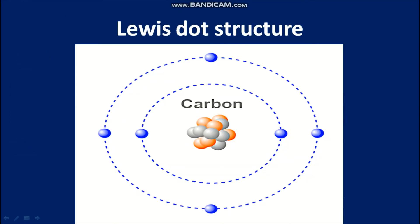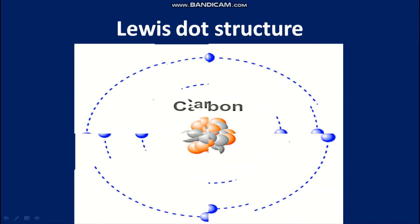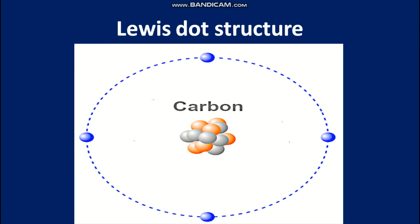Lewis dot structure. Dr. Lewis said we should draw elemental symbols and then draw the electron valence shell around it. Let's see how this works with carbon. The most important part in terms of carbon's reactivity is the valence shell, so let's get rid of everything else. Carbon has the atomic number of six, and two of those electrons are in the first shell, leaving the other four in the valence shell. These dots represent the electrons in the valence shell — this is the Lewis dot structure for carbon.